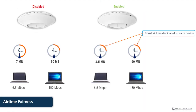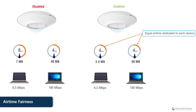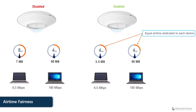In wireless communication, only one device can send or receive at a time. When two devices transmit at different rates, the higher-rate device gets impacted because it has to wait for the slower device to finish. To equally divide airtime between devices, GWN access points support a feature called Airtime Fairness, which ensures higher-rate devices won't get impacted. However, the downside is that slower devices will get even slower because they now have less airtime for transceiving.